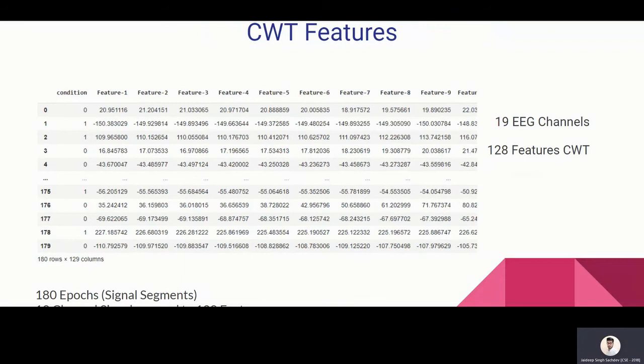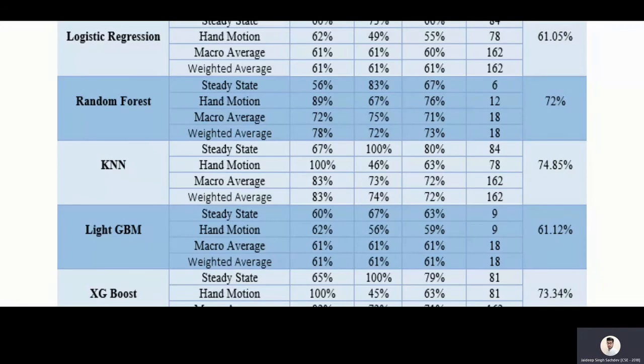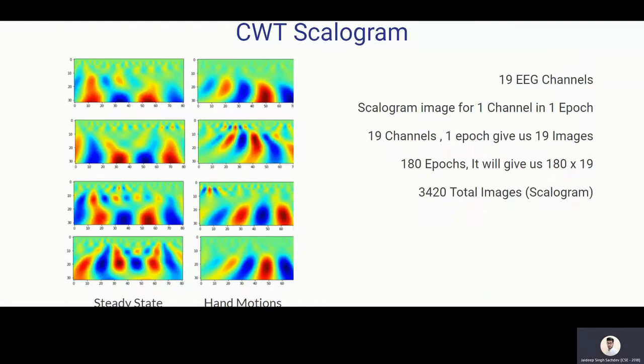Now, once I got the coefficients, we get around 2 to the power may, we get the features. And I got around 128 features for CWT. Now you can see that we have 129 columns, one for the condition, 128 features, and 180 epochs. When I applied different machine learning models, I found that random forest, KNN, and XGBoost were fairly good. This is because this data is continuous and the EEG signal in a time domain is not sparse. That's why these models perform well. These are the other metrics like precision, recall, F1 score, support, and accuracy.